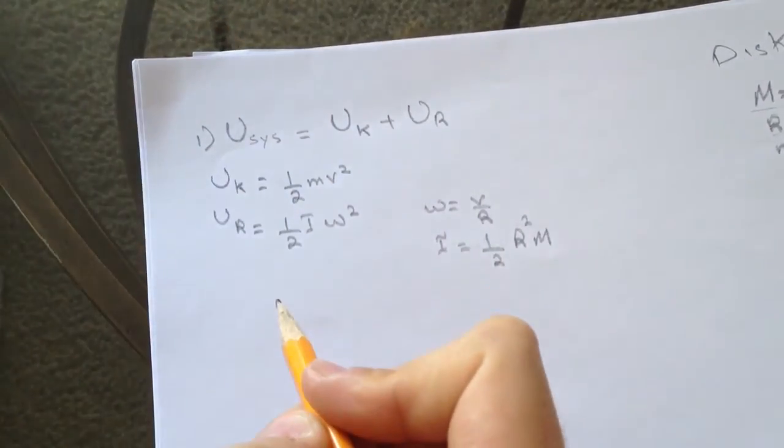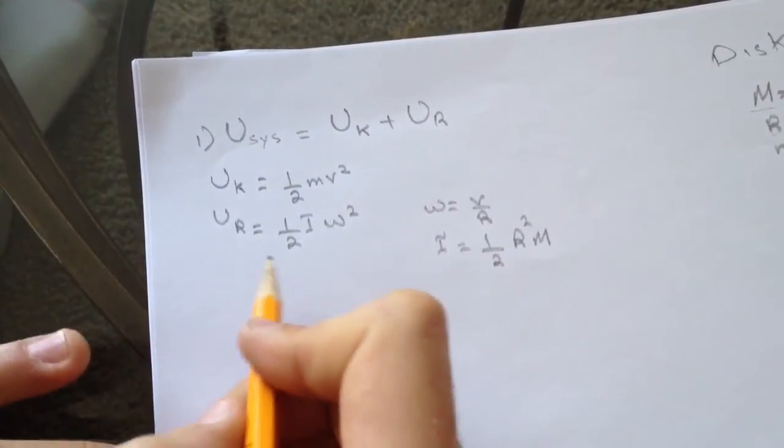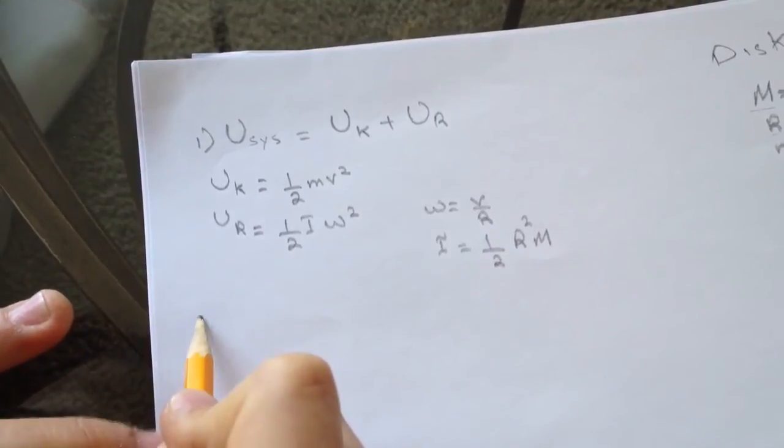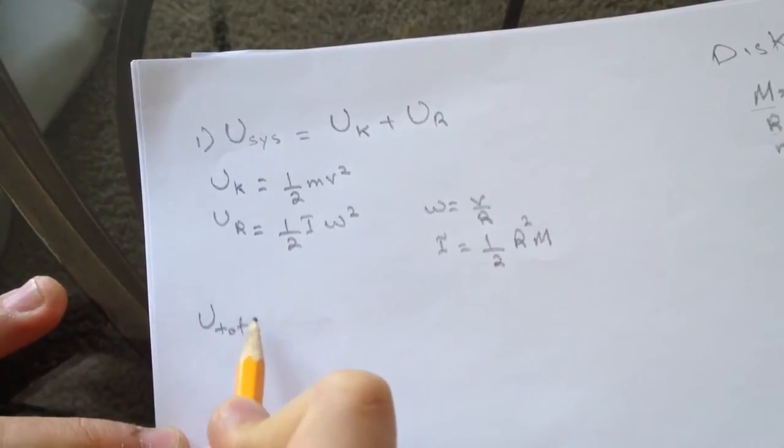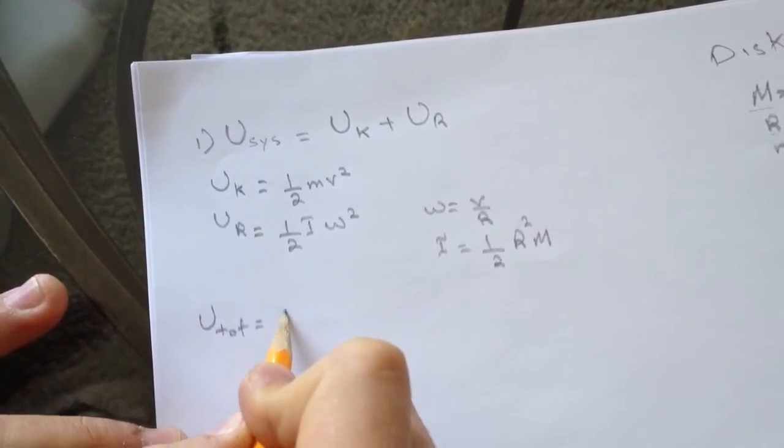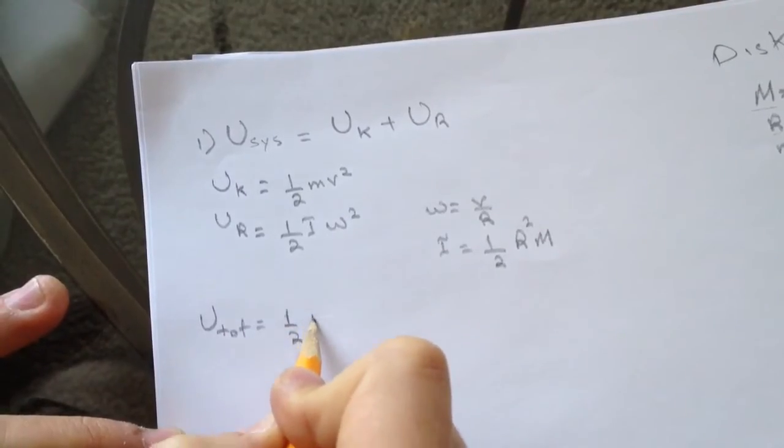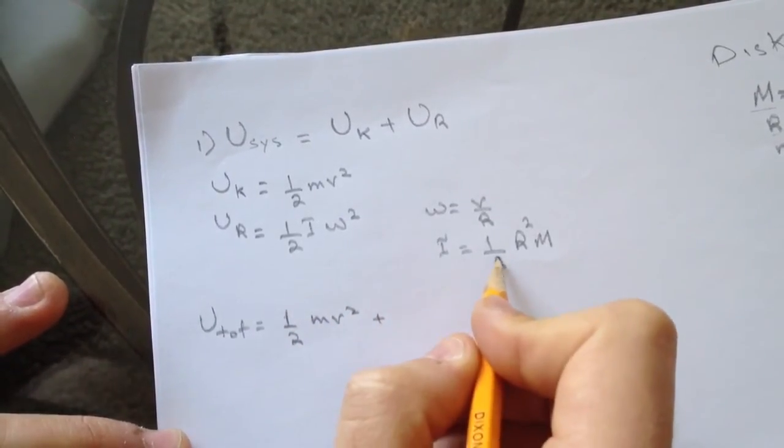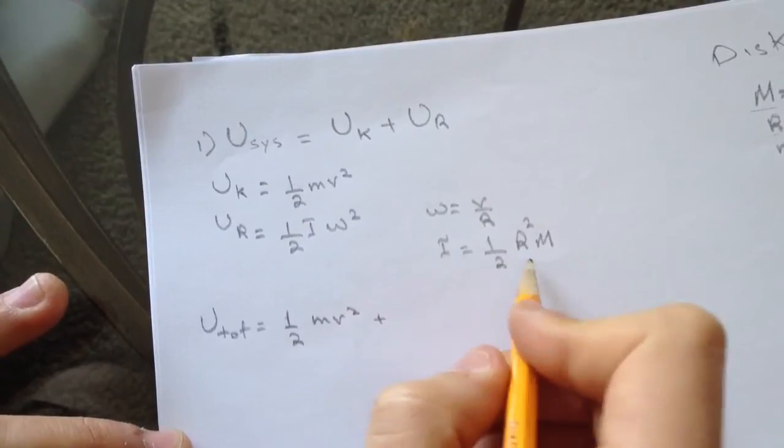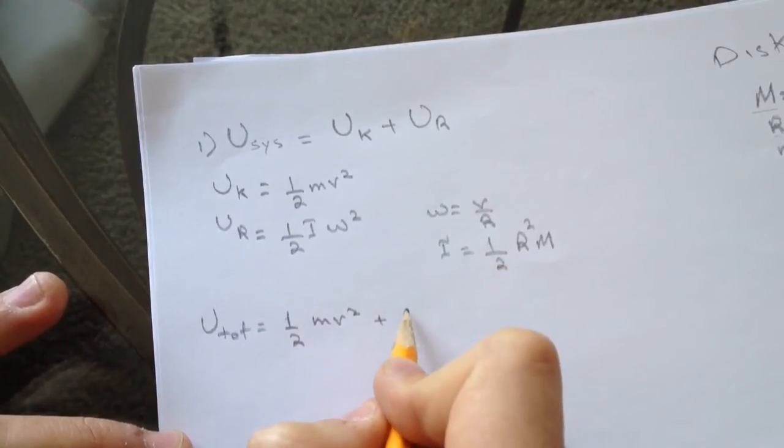So the U total equals half mv squared plus, putting everything together, we'll end up with one-quarter Mv squared.